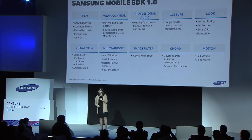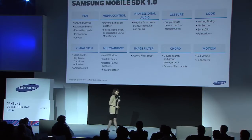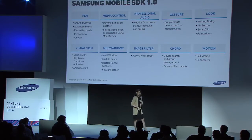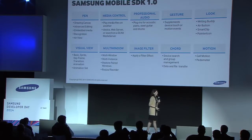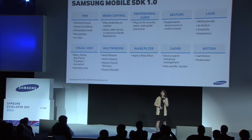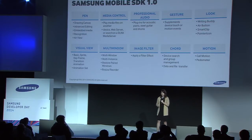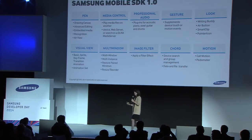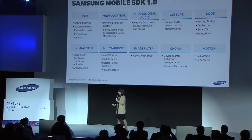Image filter lets you apply — there are 32 or 34 different filters to your image. There's CORD, which is basically peer-to-peer communication. And then there was motion, which tracks the device motion. The accelerometer is used to track how your device is moving around. So that was 1.0.